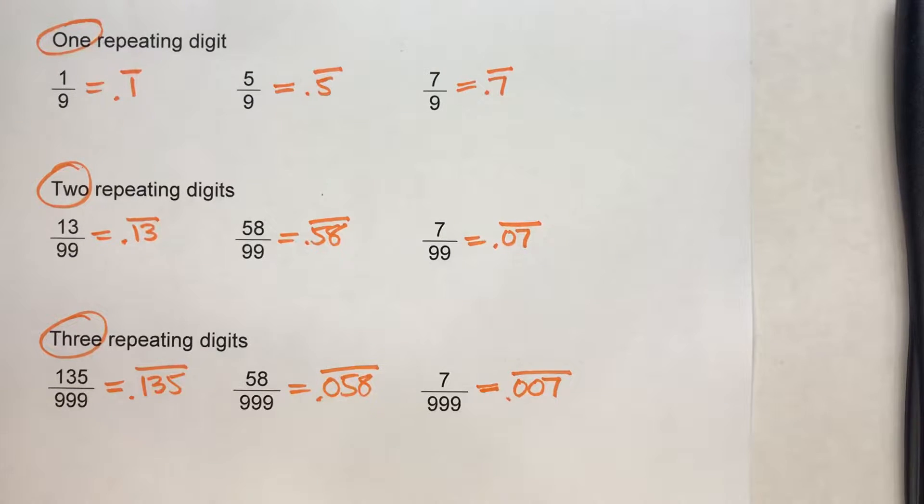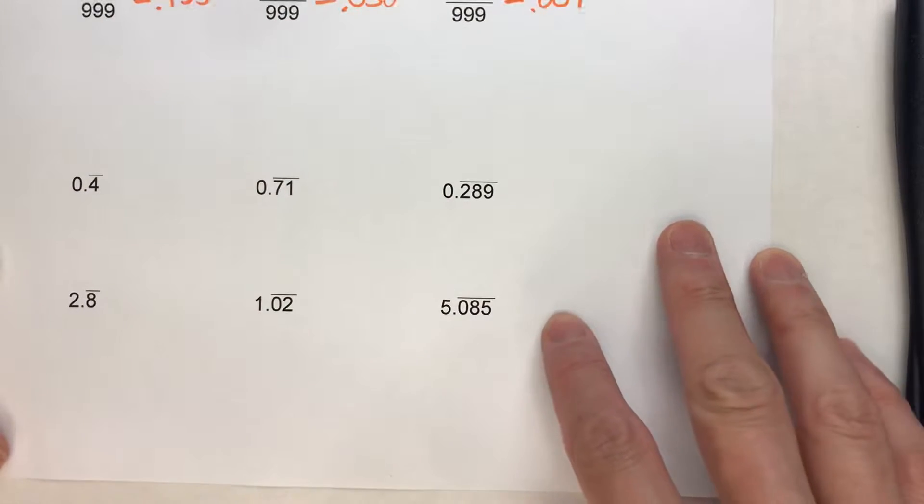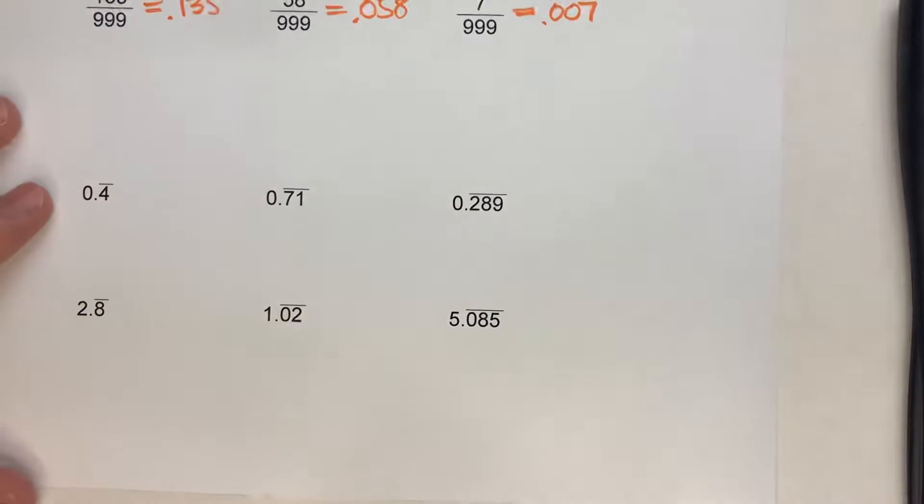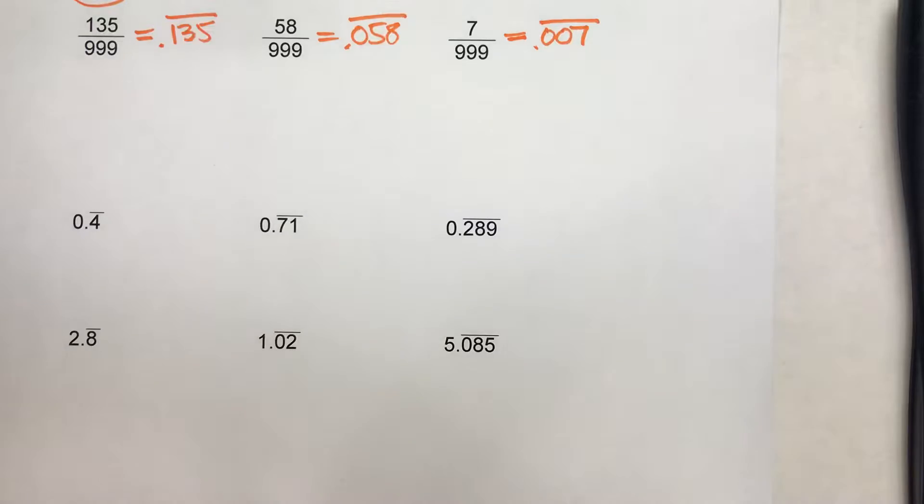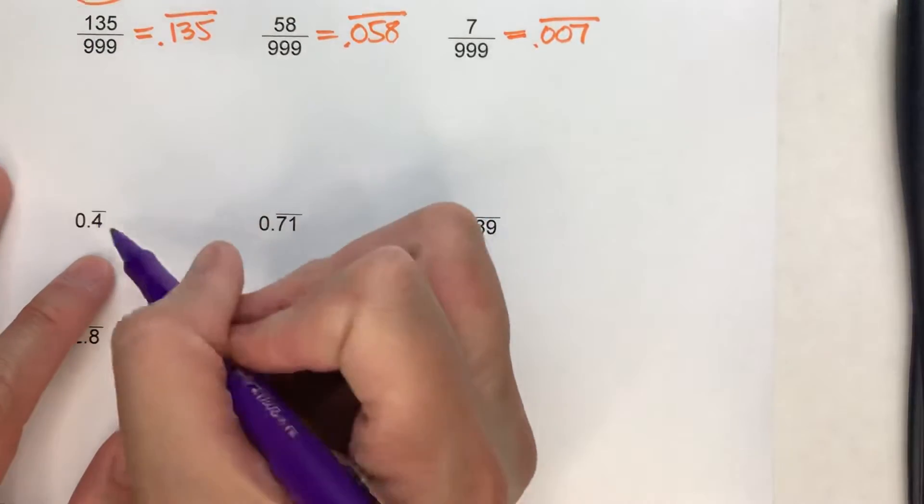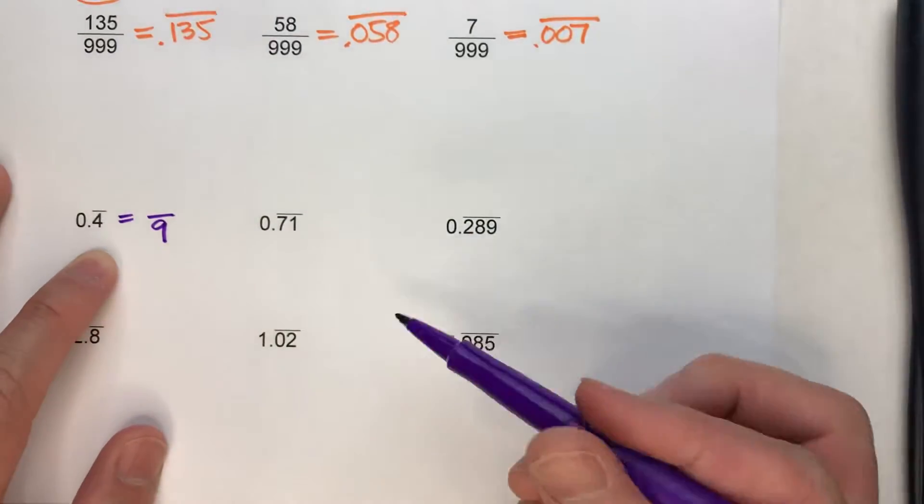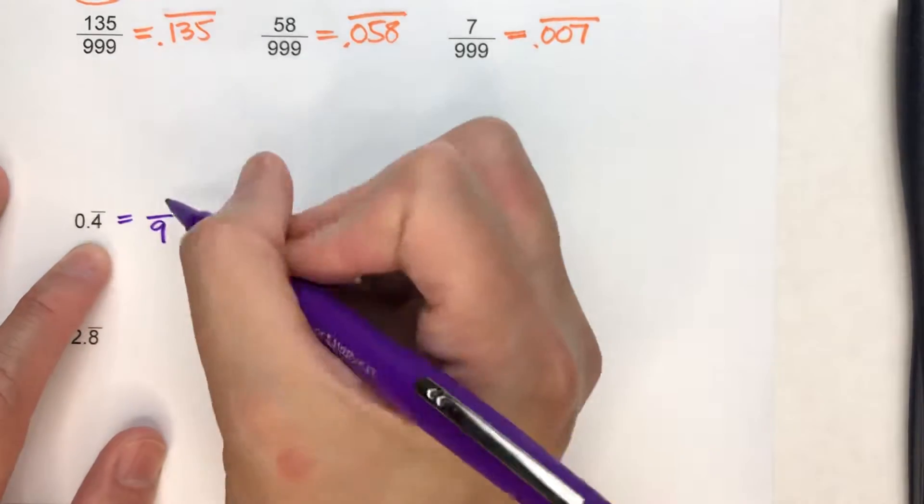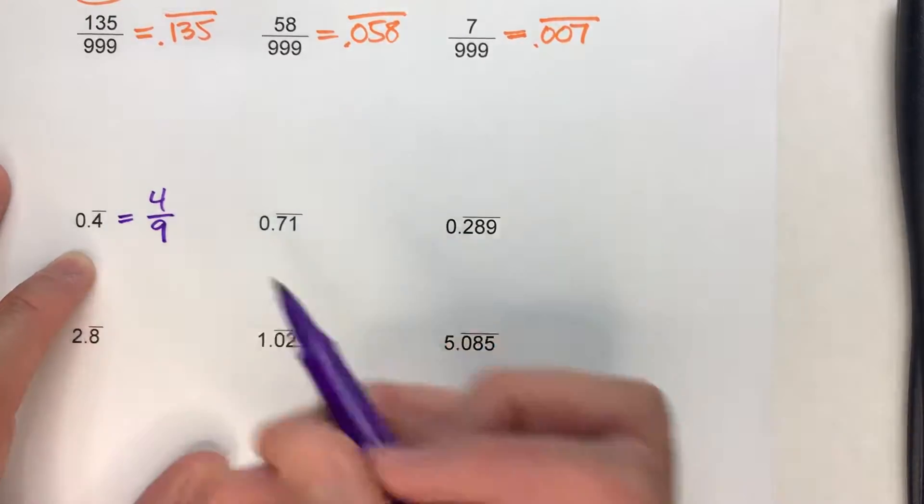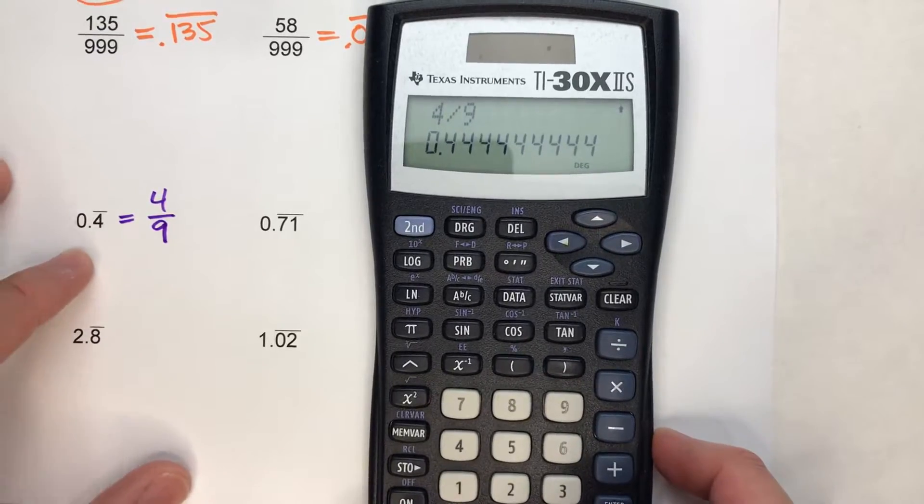Now we can use this when we've got the opposite situation. This time I've got just repeating decimals, and if I want to convert these to fractions, I can use the patterns I just got through working with. For example, look here. 0.4 repeating. We've got one digit repeating. So that means the denominator is 9. And the one digit that's repeating is a 4, so that's my numerator. So the fraction equivalent of this decimal is 4/9. If you're not sure, use your calculator. And you can see, 0.4 repeating.